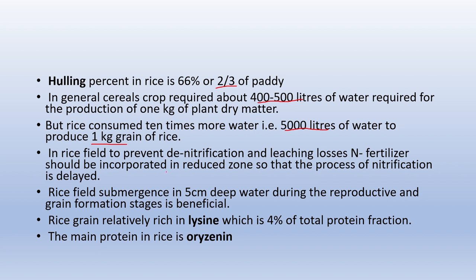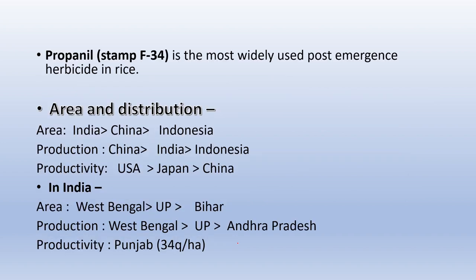In rice cultivation, the field is flooded with water. Therefore, we generally do not use nitrate fertilizers because denitrification and leaching losses occur. Rice contains a protein called lysine, which constitutes 4% of the total protein fraction. The main protein present in rice is called oryzenine. Propanil is the most widely used post-emergence herbicide in rice.